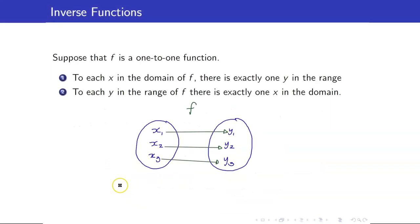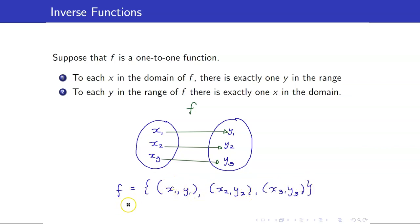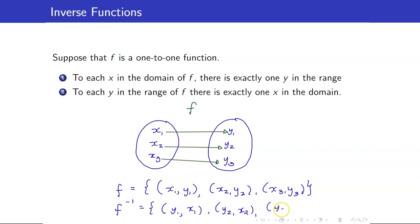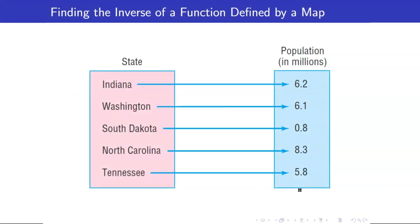Going back to this example, our f represented as a set of ordered pairs is {(x1, y1), (x2, y2), (x3, y3)}. And therefore, our f inverse would just be this same set of ordered pairs except that they will be interchanged. We will discuss how to find inverses for all representations of functions — as maps, sets of ordered pairs, graphs, and equations.